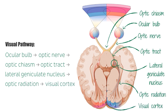Axons from the lateral geniculate nucleus travel via the optic radiation to finally reach the visual cortex. It is important to note that only 90% of the retinal axons synapse directly at the lateral geniculate nucleus. The other 10% project to other subcortical nuclei, mainly the superior colliculus. We will have a look at the superior colliculus later on, but first let's look at the main pathway in more detail.